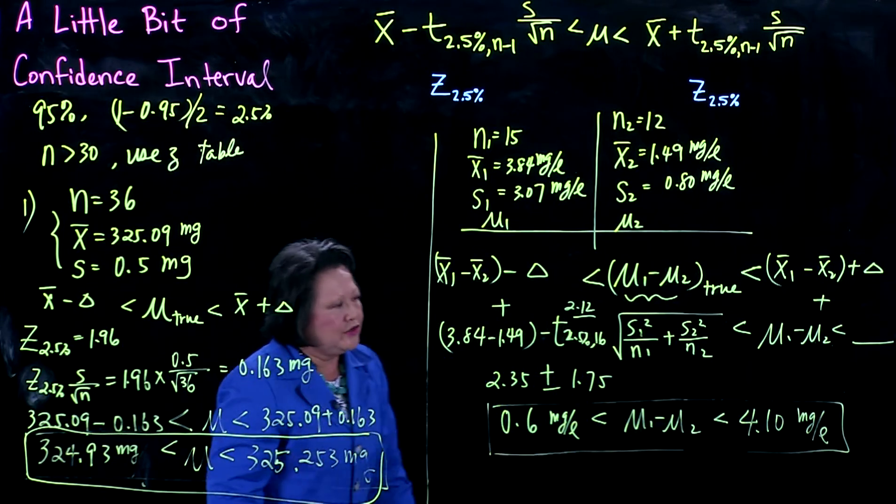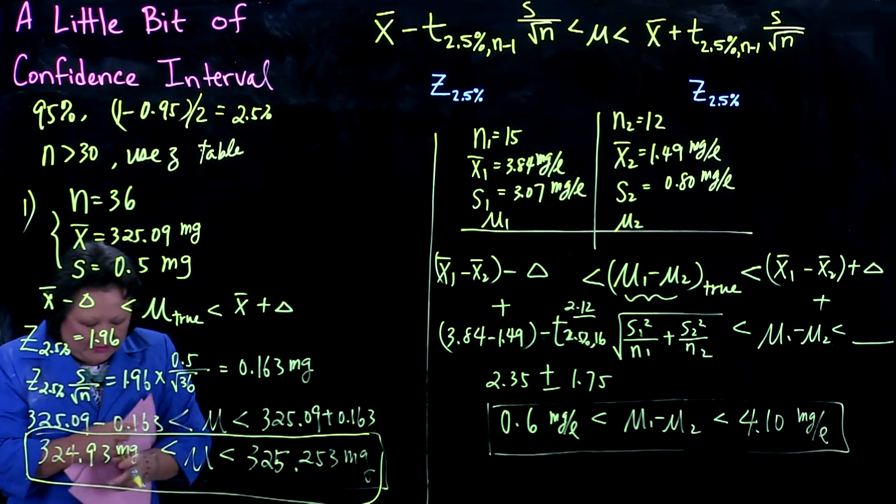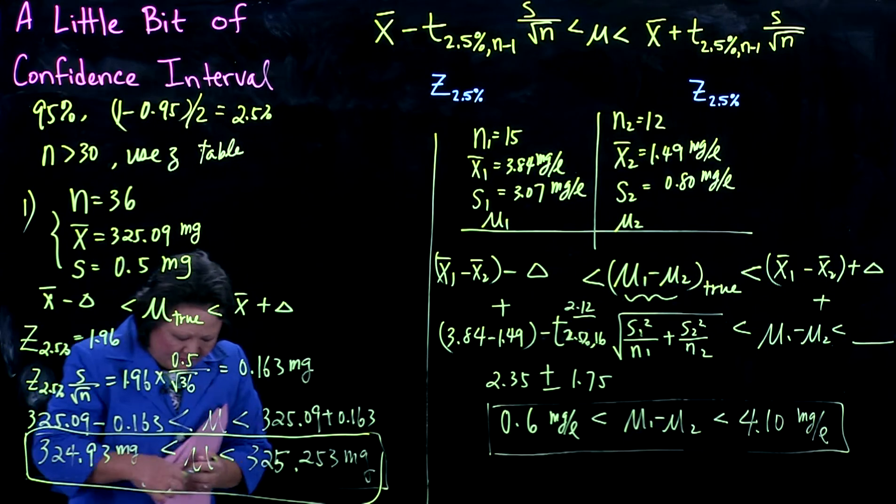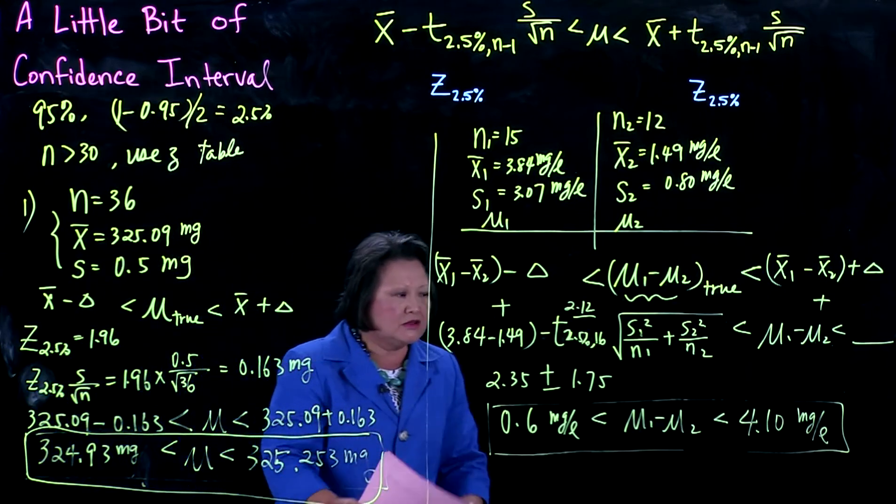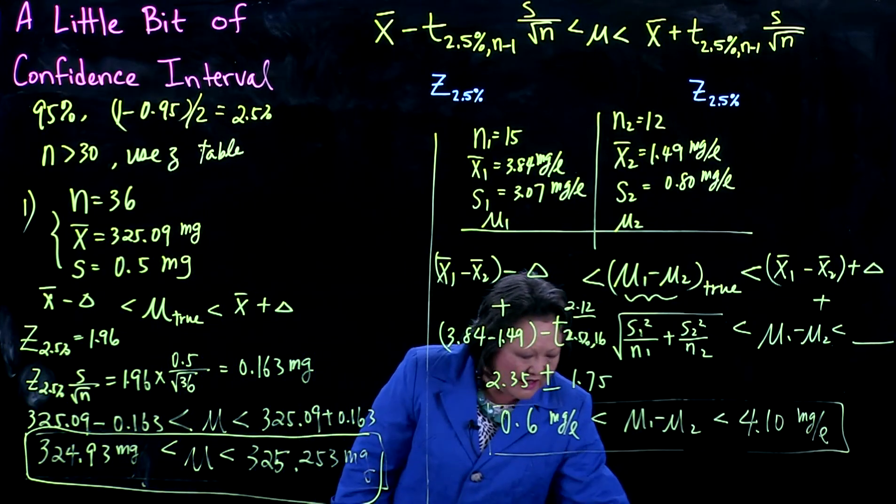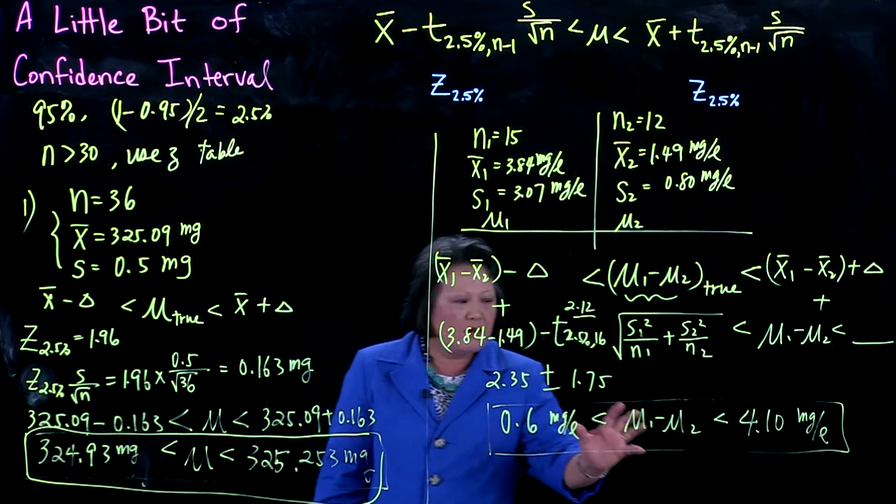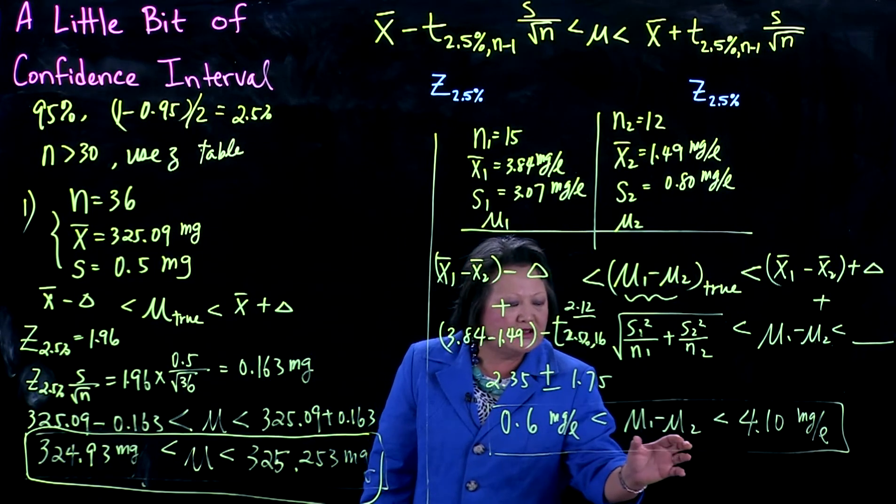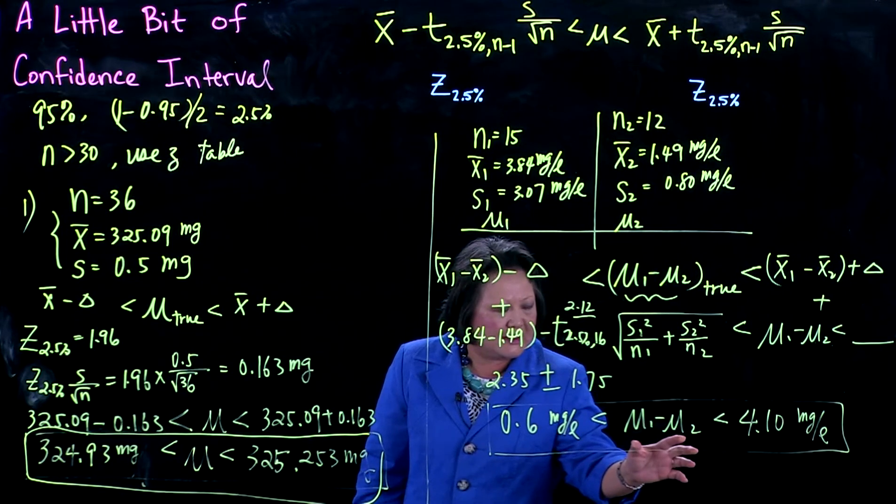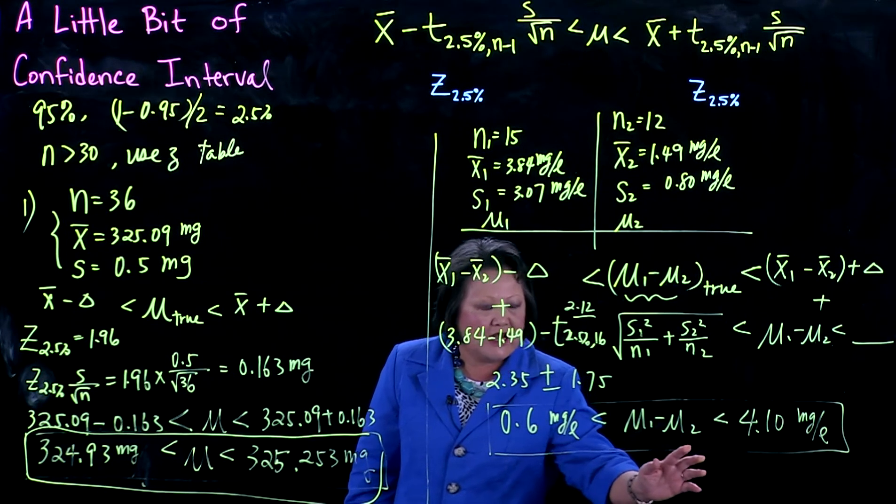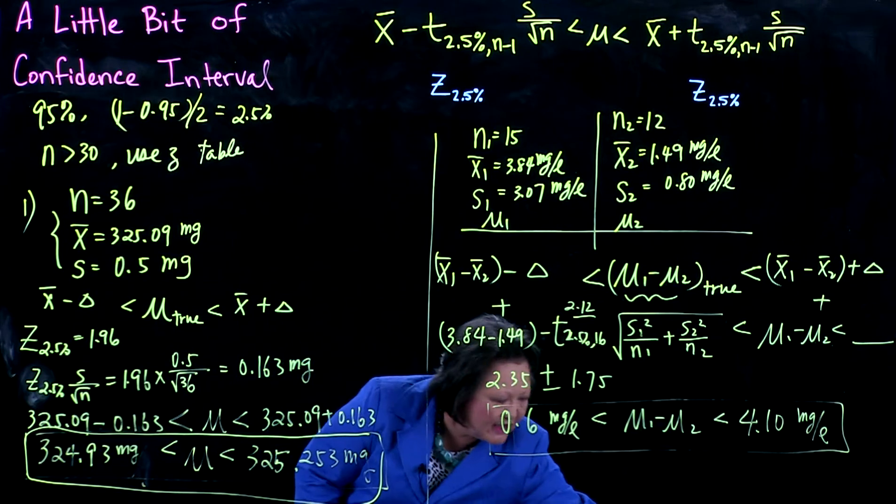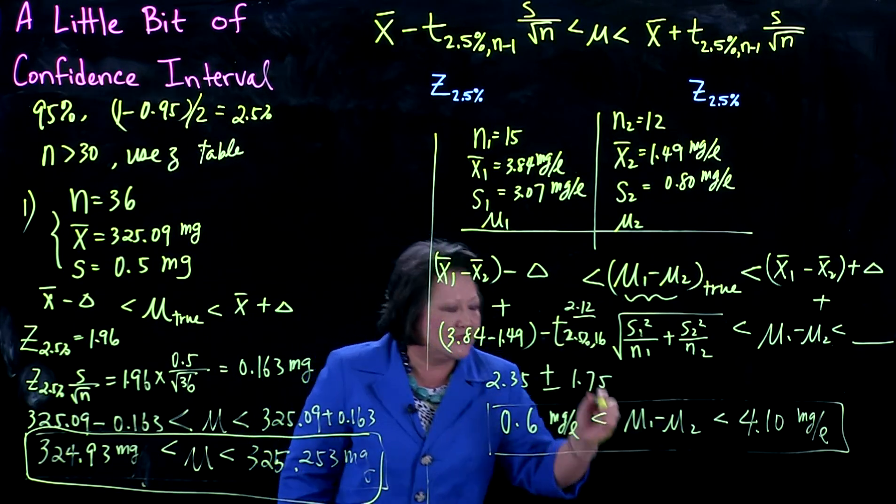When you write your report to engineering management, remember they may not know statistics. What this means is I don't know what the true reduction in contaminant is, but I do know with 95% confidence—because I used 2.5% in each tail—this is a 95% confidence level.